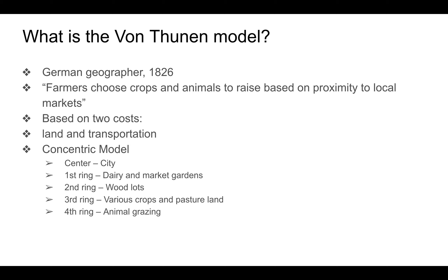In his book 'The Isolated State,' von Thünen compared two costs: land costs versus transportation costs. He said that the different rings of the city would be based on distance to the market. The rings follow a concentric zone model with the center being the market — the city where access to goods was sold. In the first ring from the market, you would find horticulture or market goods, such as commercial gardening: tomatoes, plants, and tropical fruits.